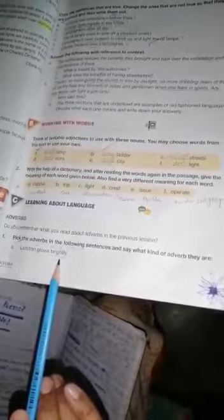Yes, the first question is, London glows brightly. What is the adverb? Brightly. We have to write brightly underline and write adverb of manner. You can write it in complete form. We can write it in short form. This way you can write it.